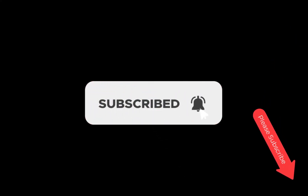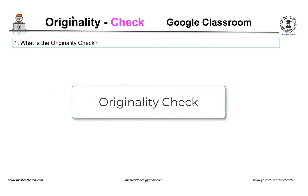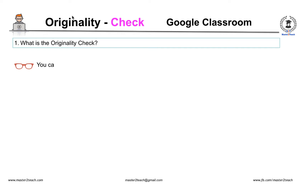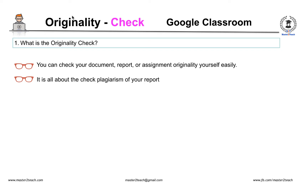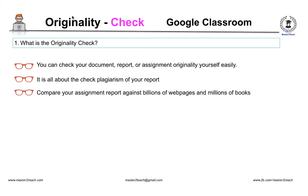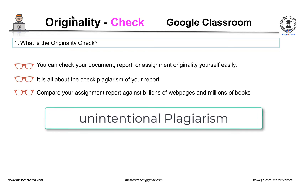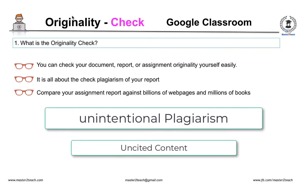Let's start. What is the originality check? One of the great features introduced by Google Classroom is originality check, where you can check your document, report, or assignment originality yourself easily. It is all about checking plagiarism of your report. Google Classroom uses Google Search to compare your document or assignment report against billions of web pages and millions of books.